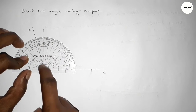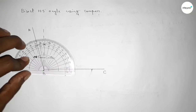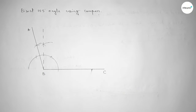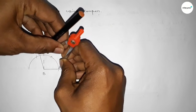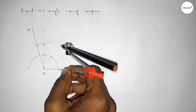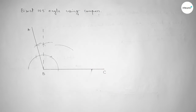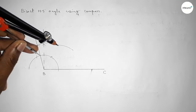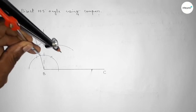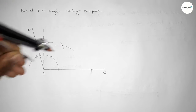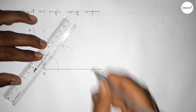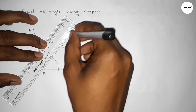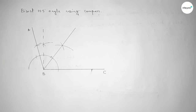Now we have to bisect this angle. Putting the compass here and taking a length, drawing arcs on both sides. Again with the same length, putting the compass here and cutting here, so both curves intersect at a point. Joining this line and taking point D.